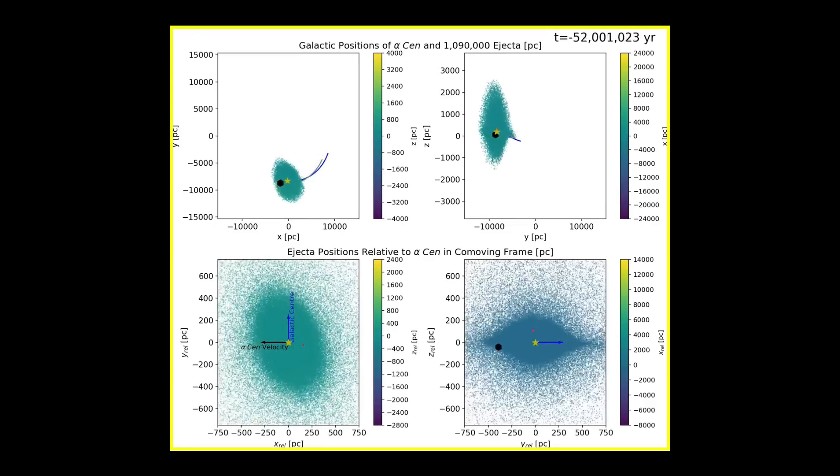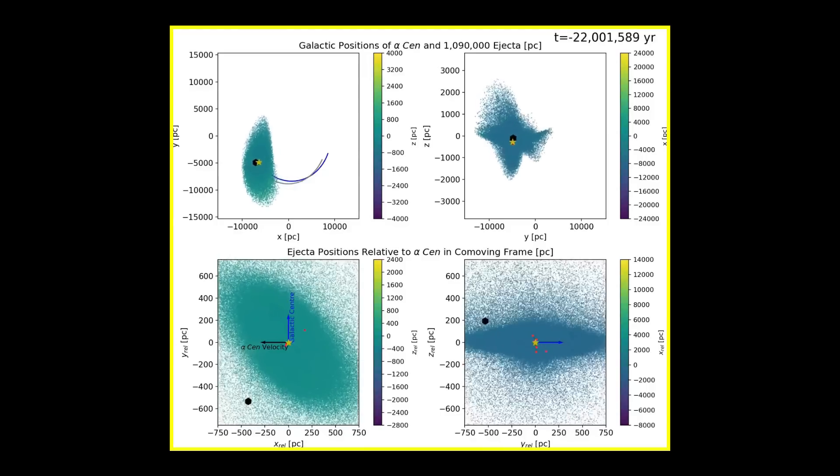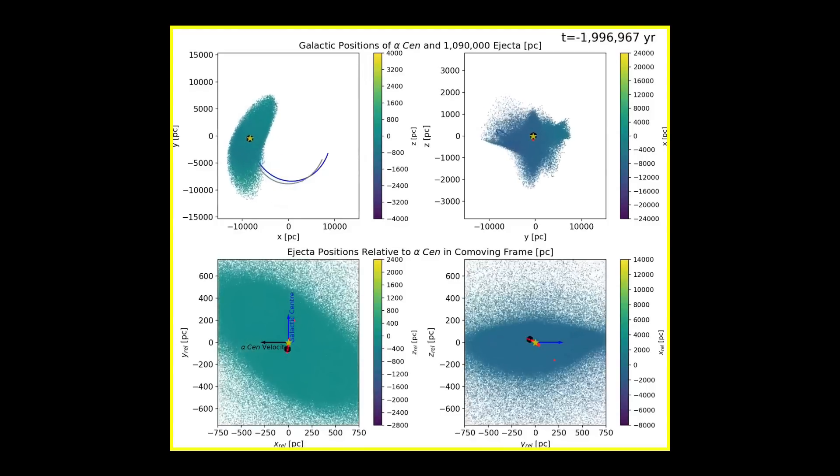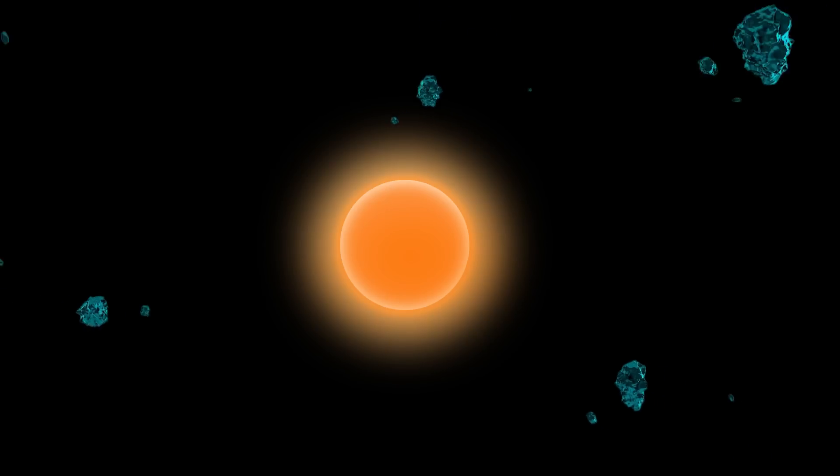The study visualizes how Alpha Centauri moves through the galaxy and tracks the movement of material it ejects, some of which may already be in our solar system.